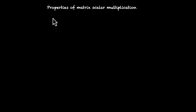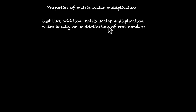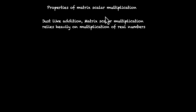In this video, we are going to talk about properties of matrix scalar multiplication. Scalar means that we are multiplying matrices with real numbers. So just like addition, matrix scalar multiplication also relies very heavily on multiplication of real numbers. A lot of properties that work for real numbers also work for matrices.